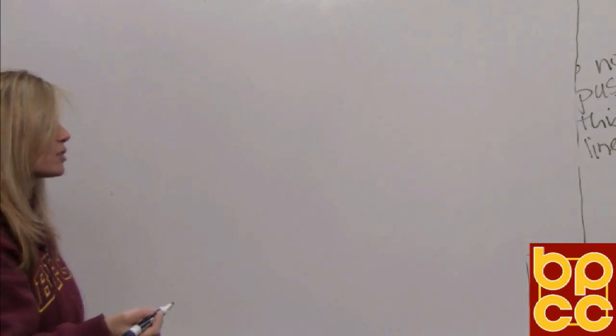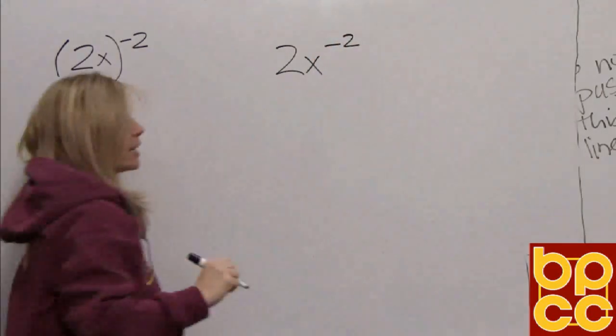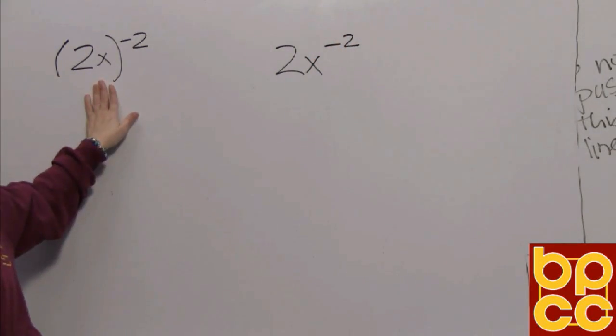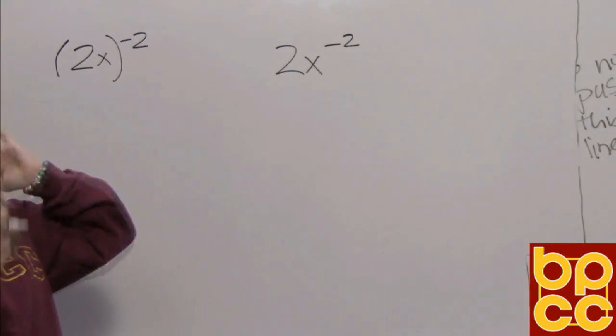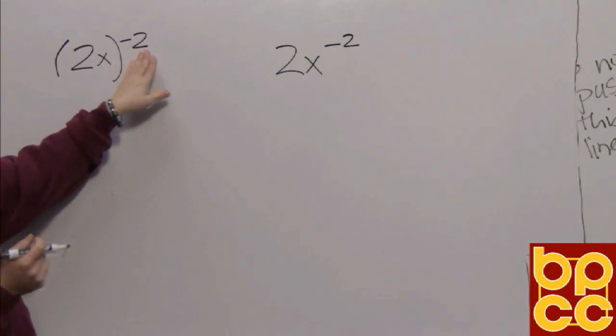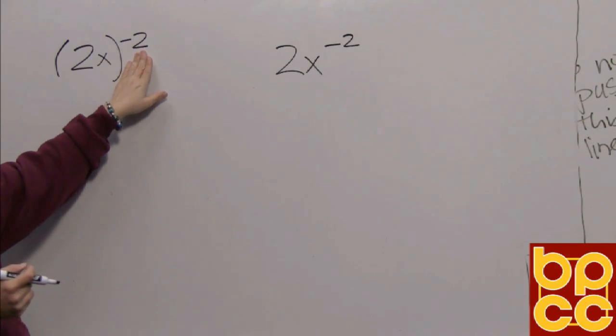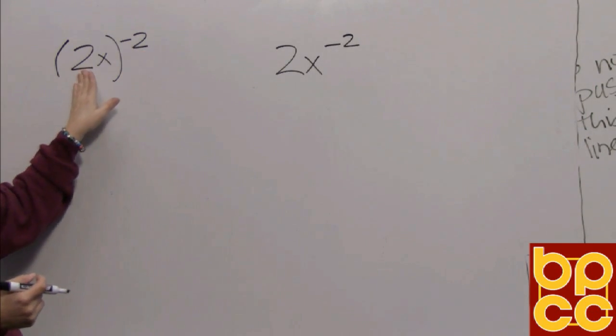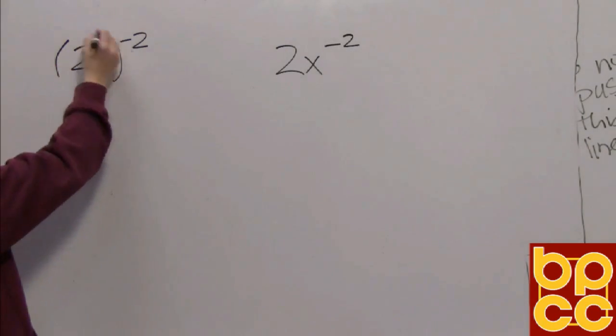So if you look at your class notes at example 9 and 10, they look the same. 2x to the negative 2. 2x to the negative 2. But they're not the same. This expression has parentheses. This one does not. So again we have to understand, I have a negative exponent. It doesn't make sense. So who owns that negative exponent? Well it belongs to both the 2 and the x. Because they are connected by multiplication and they're in the parentheses.